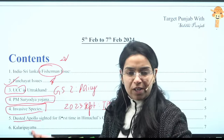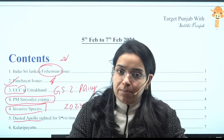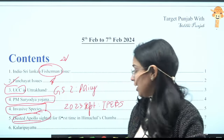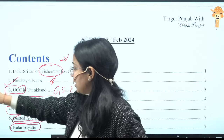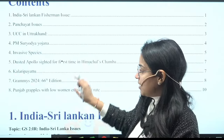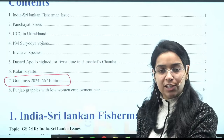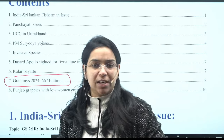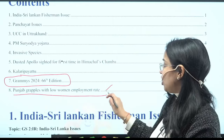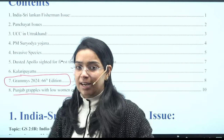Dusted Apollo is a topic for prelims — species-based questions are frequently asked. We will remember the name of this butterfly. Kalaripayattu is also a martial art form that can appear in culture-based questions. The 66th Grammy Awards have been announced — important for prelims, though limited role in mains. Finally, there is an important data fact we will discuss.